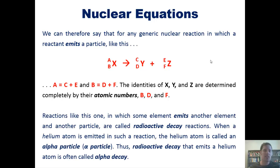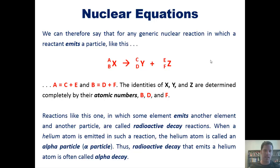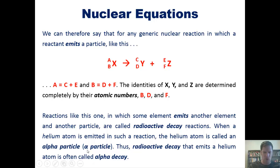Reactions like this one, in which some element emits another element and a particle, are called radioactive decay reactions. When a helium atom is emitted in such a reaction, the helium atom is called an alpha particle — you can use the Greek symbol alpha. Radioactive decay that emits a helium atom is often called alpha decay.